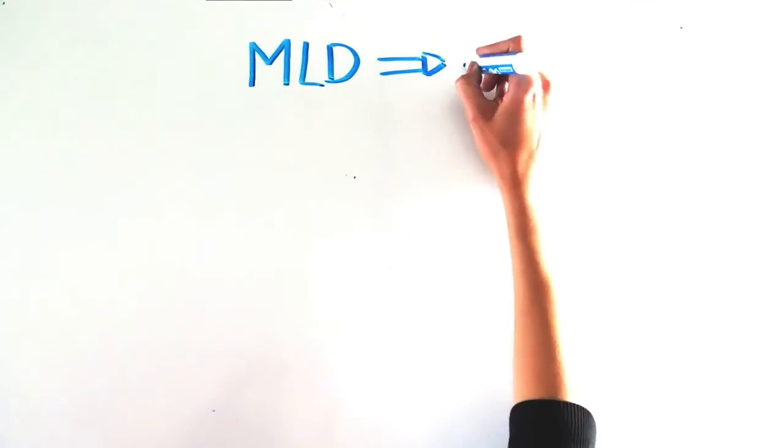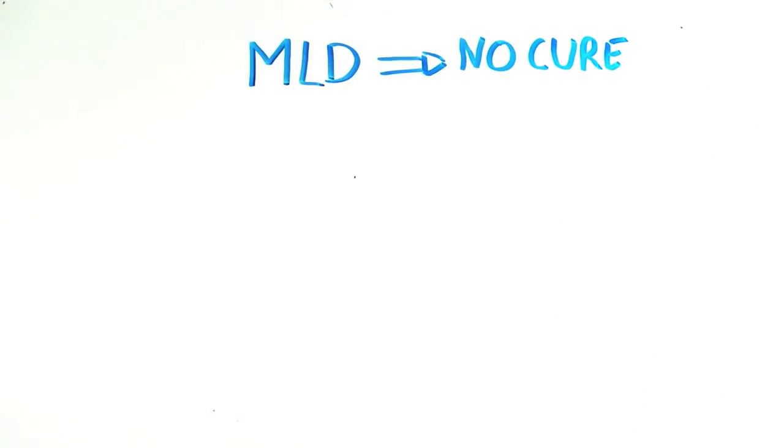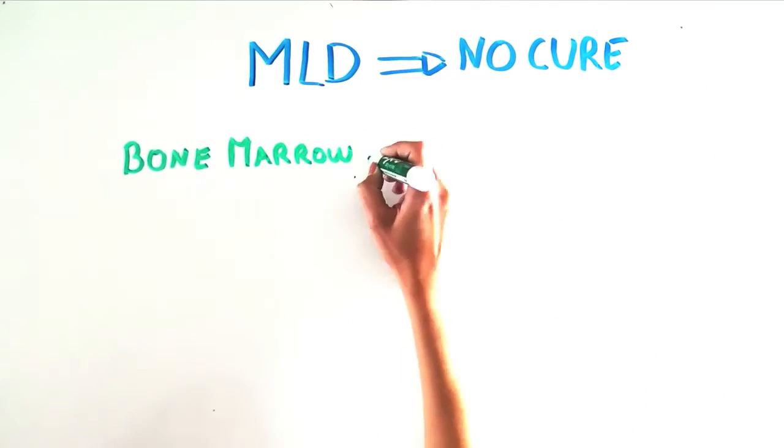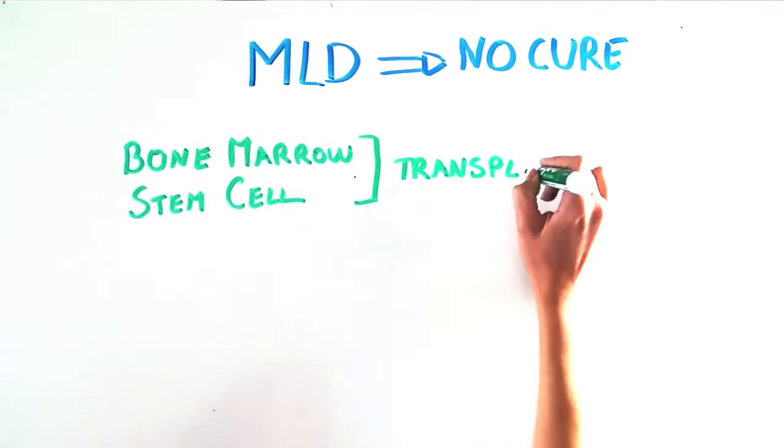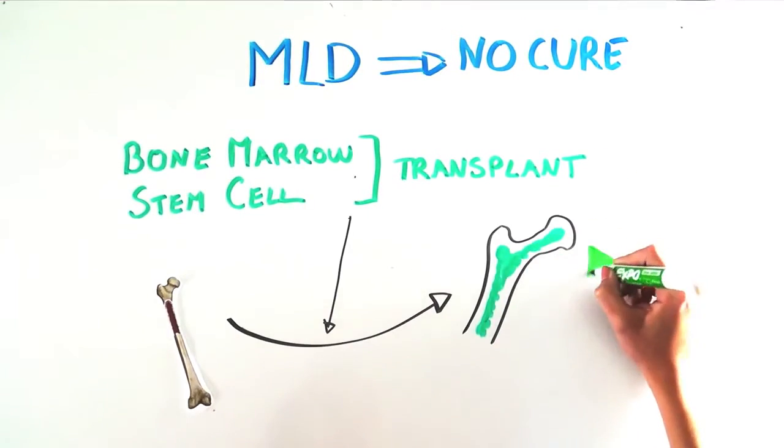What we do know is that MLD is an extremely severe disease for which there is currently no cure. Patients with MLD sometimes resort to bone marrow, or stem cell transplant, to replace the damaged marrow with healthy marrow that can produce the missing enzyme.